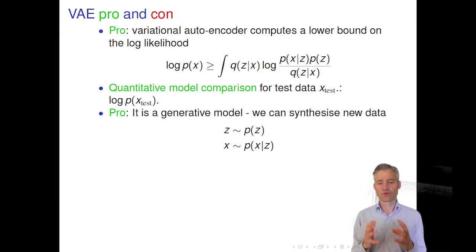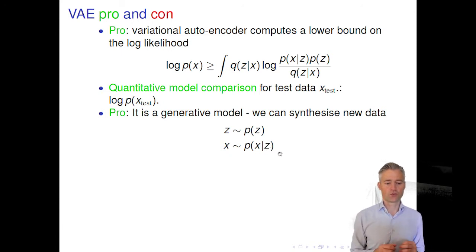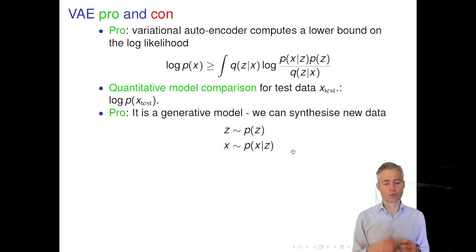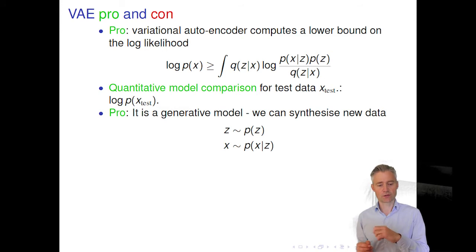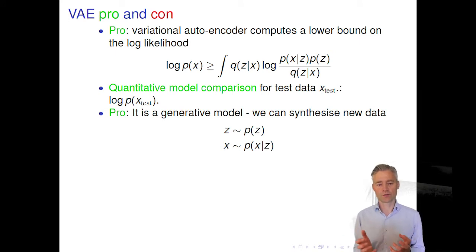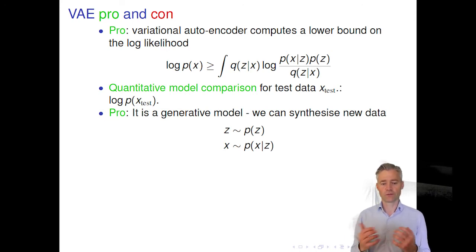Another nice thing is that once we have trained the generative model — meaning it has a latent variable, prior distribution, and likelihood function, which is the conditional of observed data given the latent — we can synthesize new data. We draw a z from the prior distribution over the latent manifold, insert it into the conditional distribution, and draw an x. If it's images, we can assess how well they resemble the natural images in the training set, which can inspire further model development.